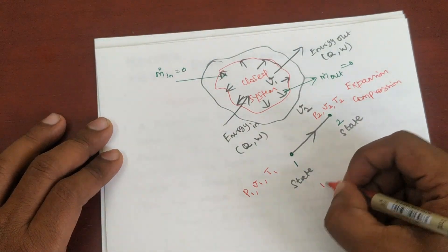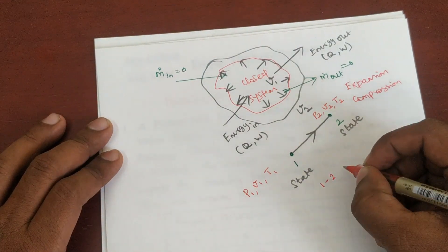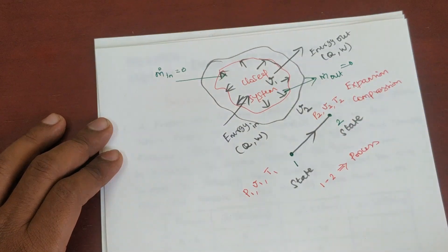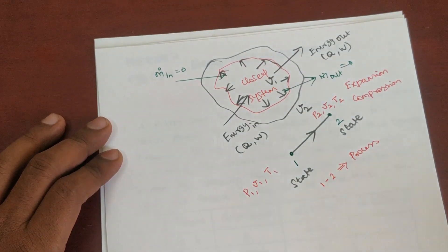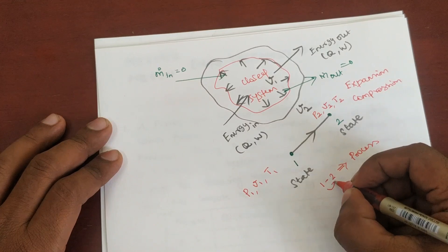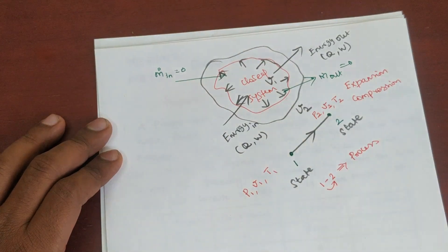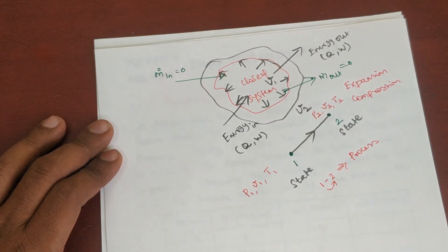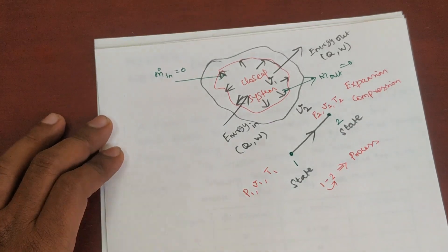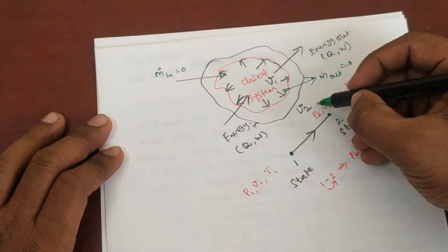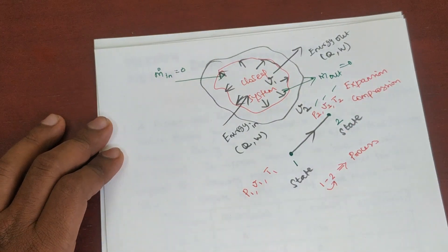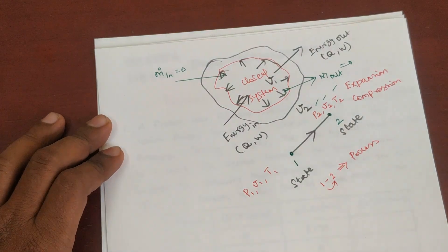From state one to state two is called a process. In going from one to two, there are a lot of processes available — around seven types. In these seven types, we have to follow the process, and that gives us the end-point variables P2, V2, T2. It may be a process or a cycle.